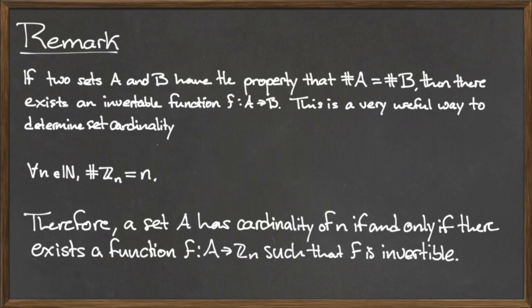Using this information, we say that any set A has the cardinality of n if and only if there exists an invertible function f from the set A to the set Z mod n. We will discuss this further in a later video, but for now it is important to provide an introduction.